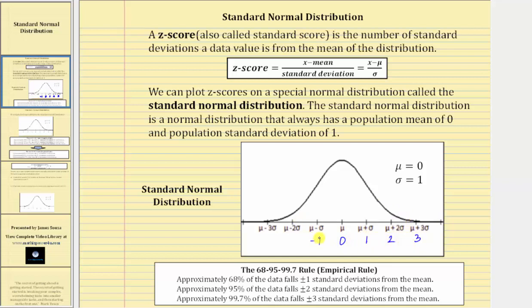To the left of zero, we have negative one, negative two, and negative three standard deviations, which again are also z-scores. So if we label the normal distribution with z-scores, we have what's called the standard normal distribution.